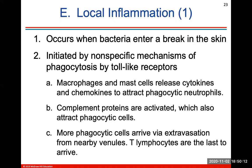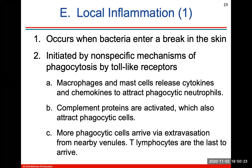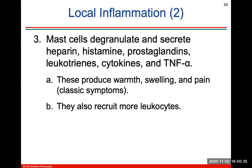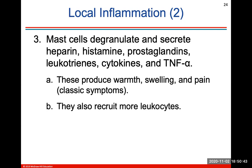Local inflammation occurs when bacteria enters a break in the skin and is initiated by a nonspecific mechanism of phagocytosis. Mast cells will degranulate and secrete things like heparin, histamine, prostaglandins, leukotrienes, cytokines, and TNF-alpha, and these will produce warmth, swelling, and pain, which are the classic symptoms of local inflammation.